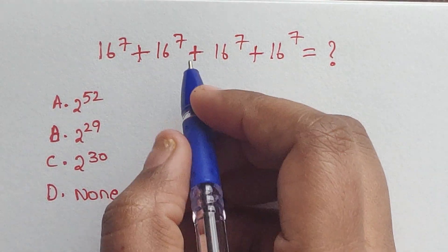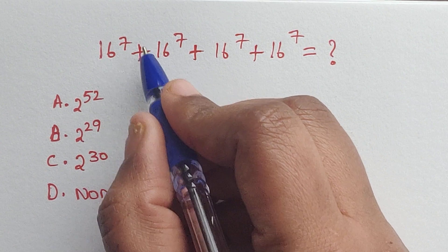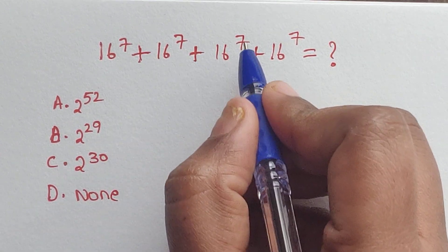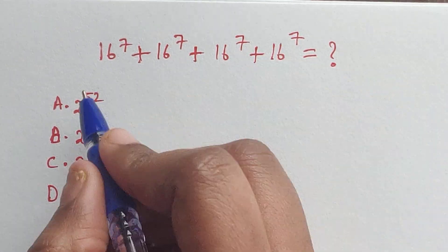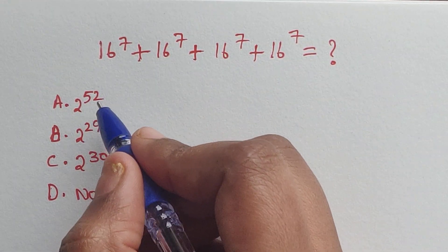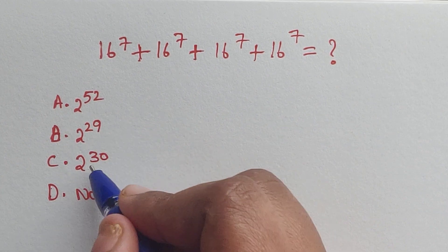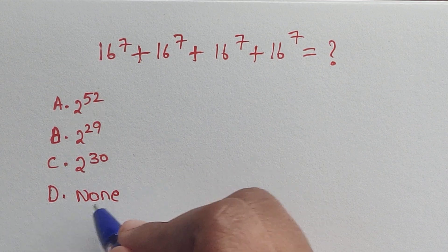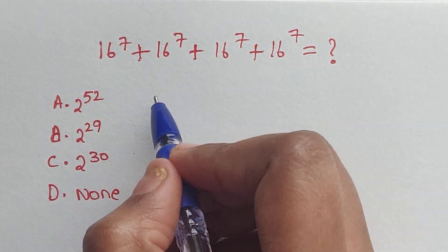Hello everyone, welcome back to our channel. Here we have one problem: 16 to the power of 7 plus 16 to the power of 7 plus 16 to the power of 7 plus 16 to the power of 7. We have four options: option A is 2 to the power of 52, option B is 2 to the power of 29, option C is 2 to the power of 30, option D is none.